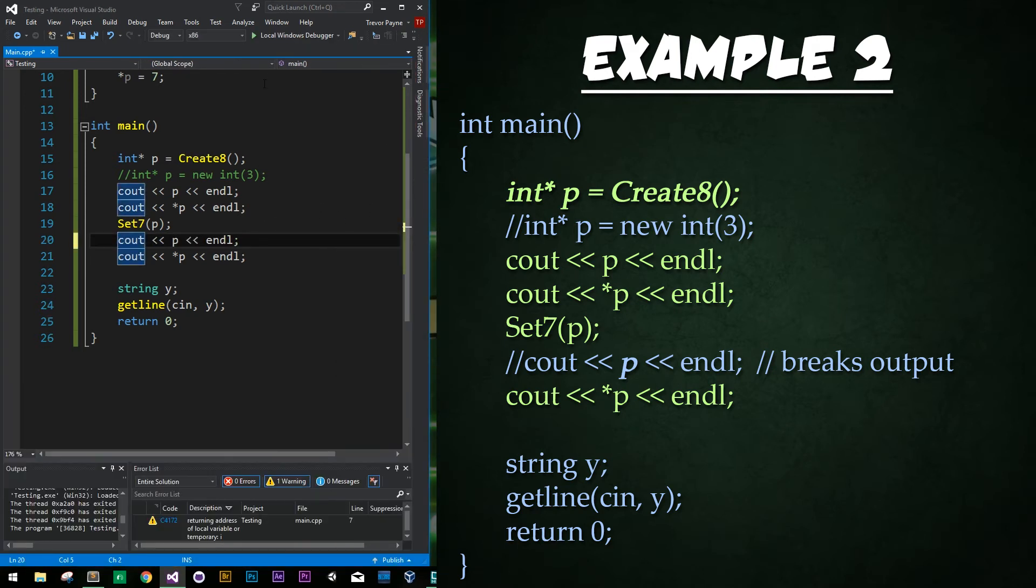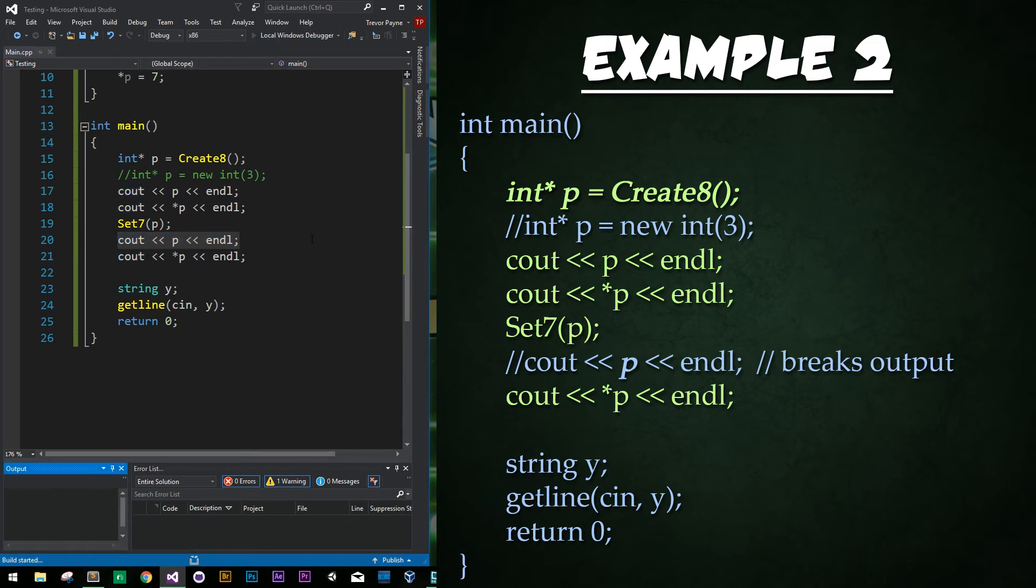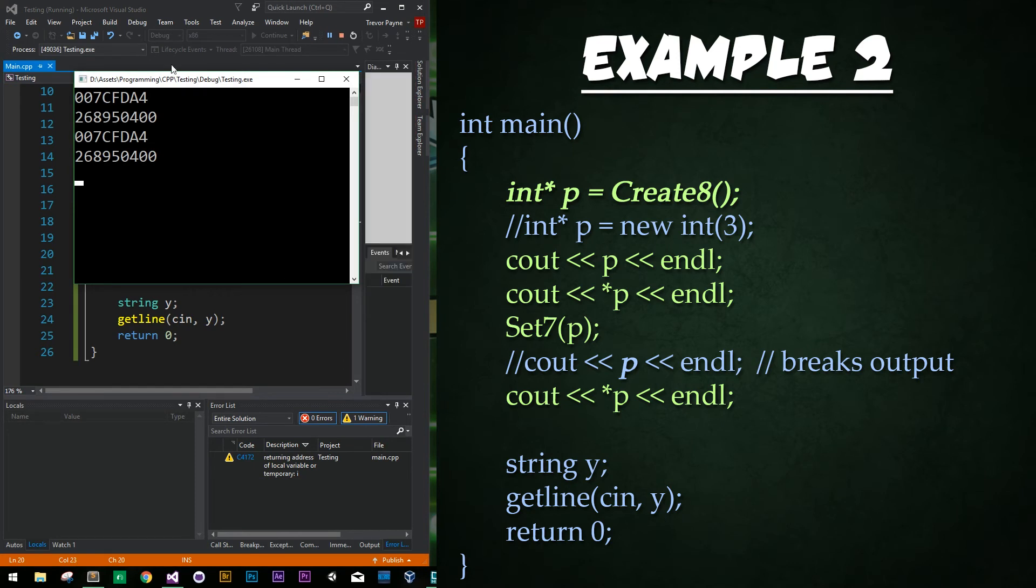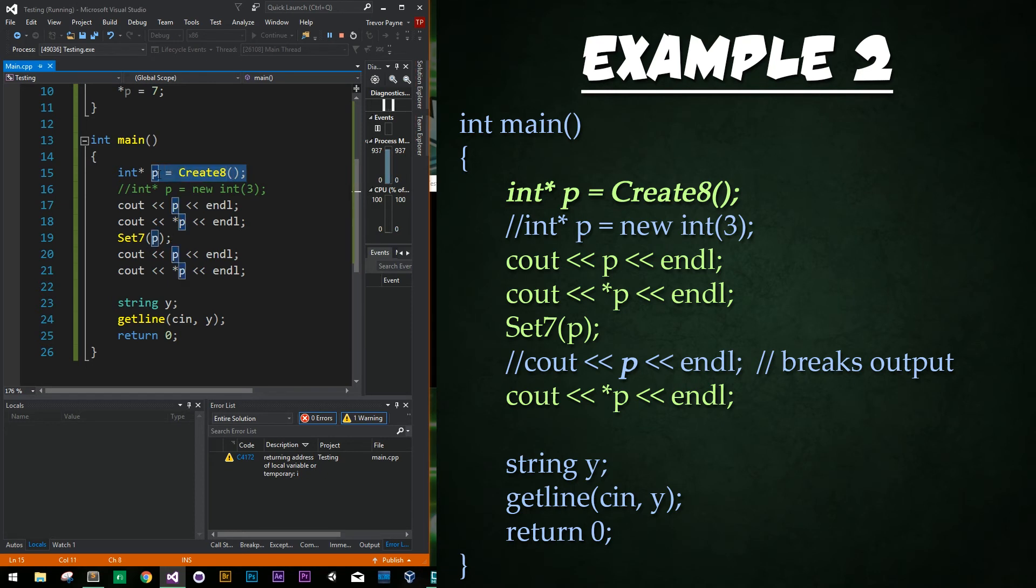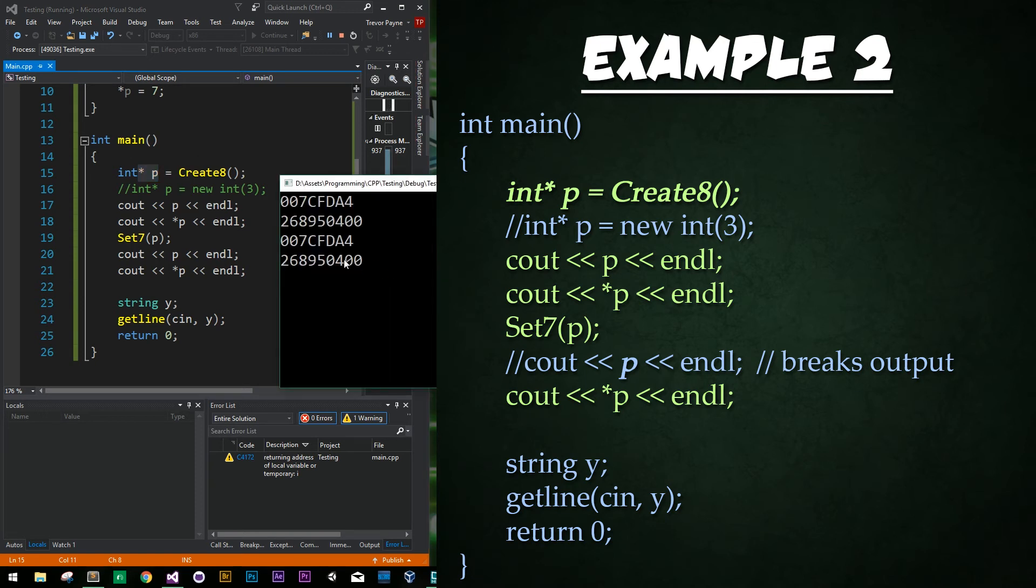I'm going to go ahead and close out the program here and all I did was uncomment this line here line 20 and we're going to run it again and now watch what happens. Weird. So where before we were seeing this value as being set to 7 it is now set to some garbage value. That is because initially we were pointing to an address that was released and since it was released since that address was released back to the stack it went ahead and assigned some other data over it and it resulted in us getting this new garbage value.